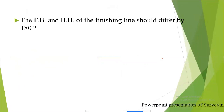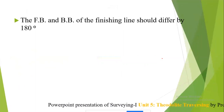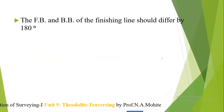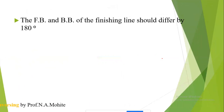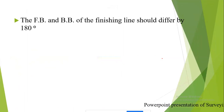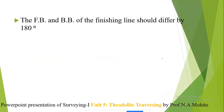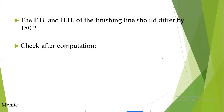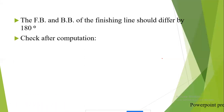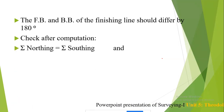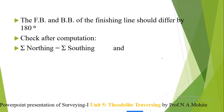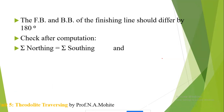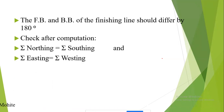The fourth check: the forebearing and backbearing of the finishing line should differ by 180°. Whenever we deal with the measurement of bearing of the traverse, the forebearing and backbearing of the finishing line should differ by 180°. The last check requires that the summation of northing equals the summation of southing, and the summation of easting equals the summation of westing.